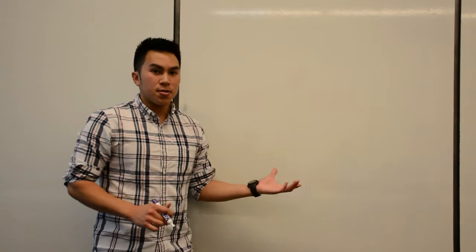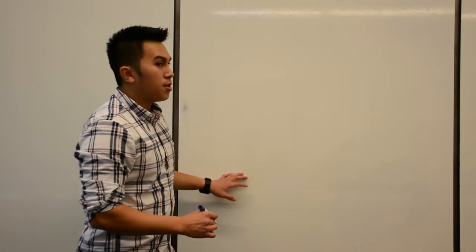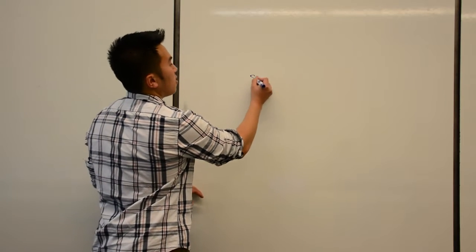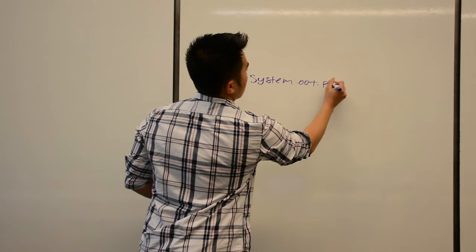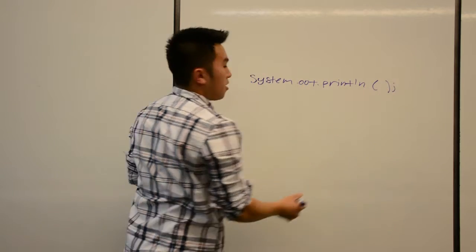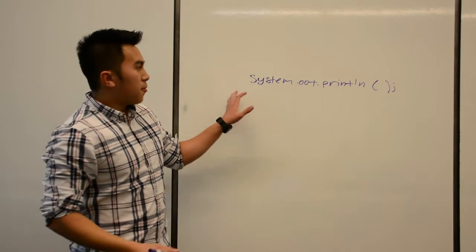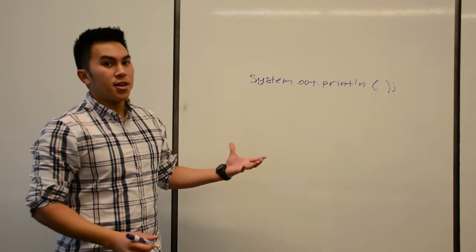So up until now, we've only been dealing with code that executes once. So if I were to ask any of you to print the numbers 1 to 100 for me, the only way that all of you would know how to do that is by writing out 100 separate println statements with the numbers 1 to 100.